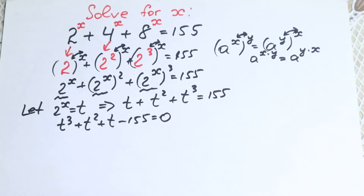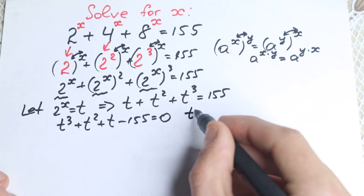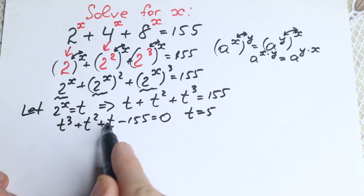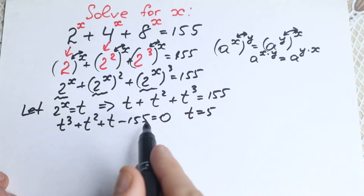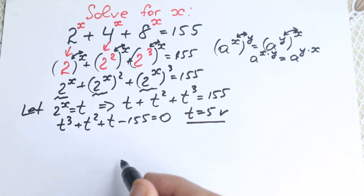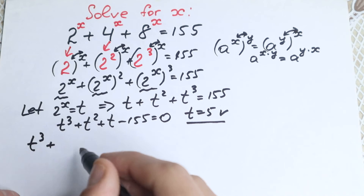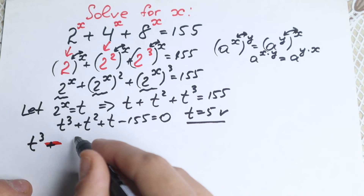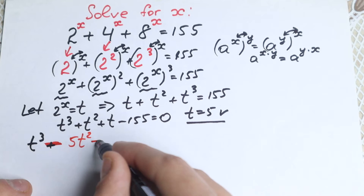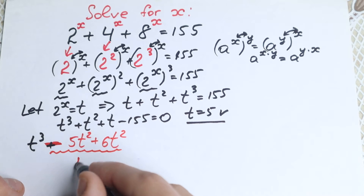This is our cubic equation and there are many approaches to solve it. We can easily see that t equals 5 is a solution, because 125 plus 25 plus 5 equals 155, so 155 minus 155 equals 0. Now let's factor to find all solutions. Let's write t cubed, then rewrite t squared as negative 5t squared plus 6t squared.